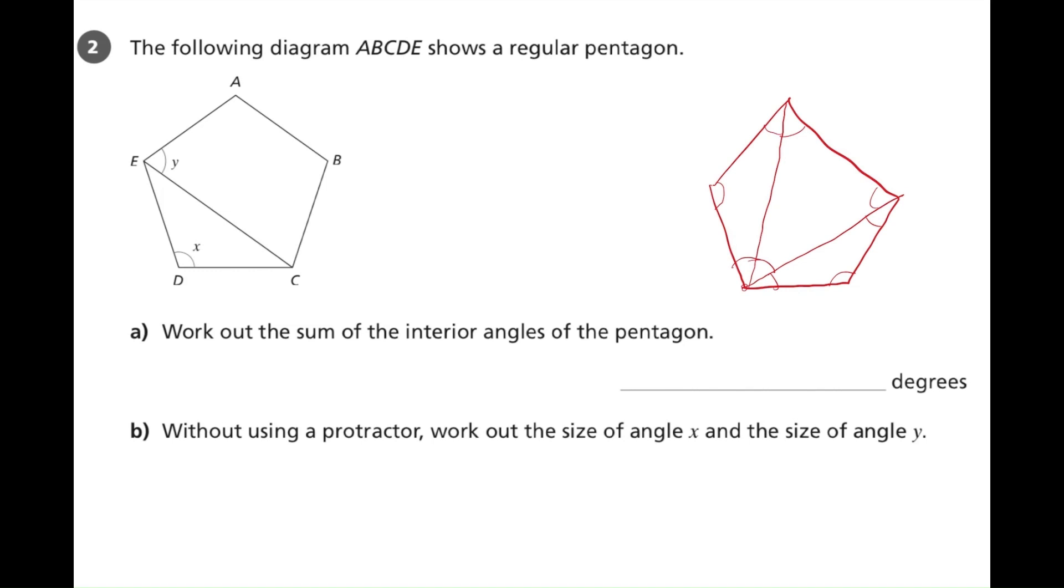So we have three triangles, each one 180 degrees, so the sum of the interior angles of the pentagon is 540 degrees.